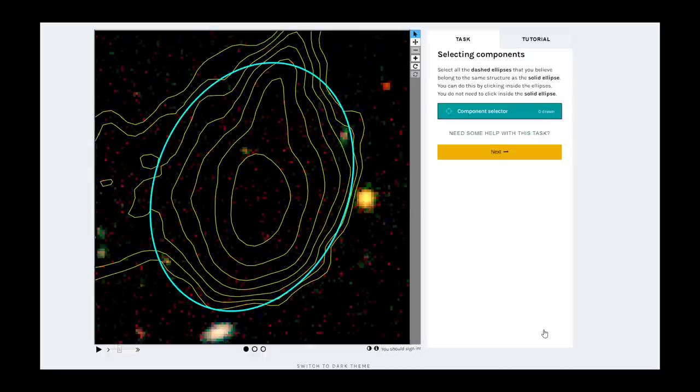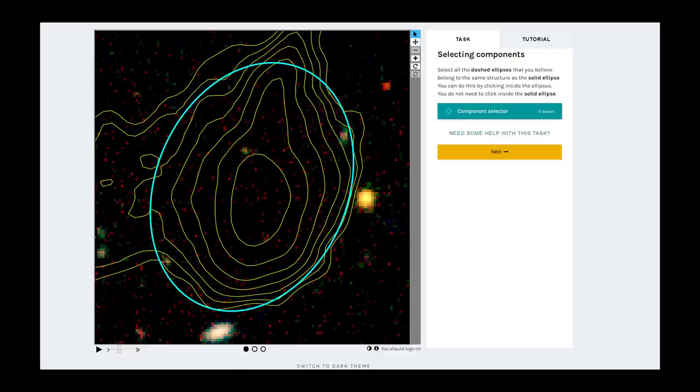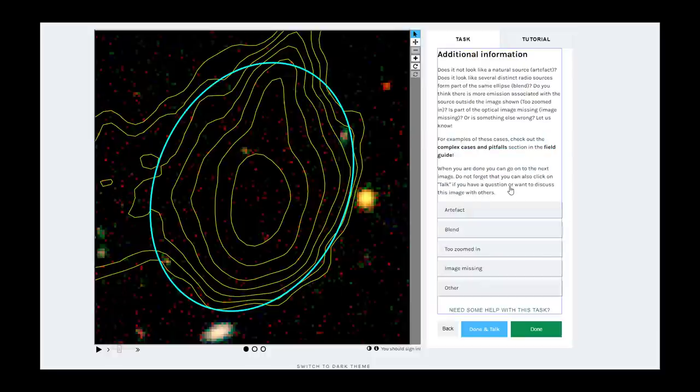You might also encounter emission that does not really have any compact structures. This is often also not caused by a supermassive black hole, but can be emitted by, for example, a cluster of galaxies. Therefore, there is often no optical host galaxy, so you don't have to do anything. By clicking through to the end, you are still contributing by letting us know that there is no optical host.